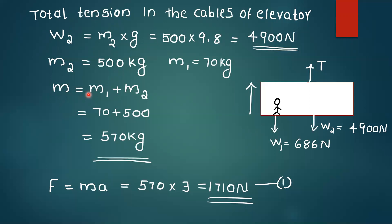We have to find the total mass. Total mass equals 70 plus 500, that will be equal to 570 kg. Now F equals M times a, so 570 into 3, that is 1710 Newton.